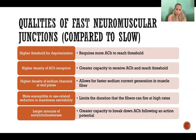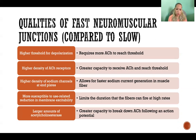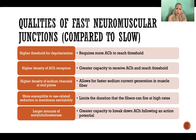A fast neuromuscular junction is also more susceptible to use-related reduction in membrane excitability. What we mean by that is that the more that fiber is contracting, the less excitable it'll be — or the less sensitive it will be to the stimulus that would cause more contraction. We want to limit the duration that those fibers are firing at a high rate because fast fibers fatigue faster, so this is a way the neuromuscular junction limits how much we are asking that muscle fiber to contract.